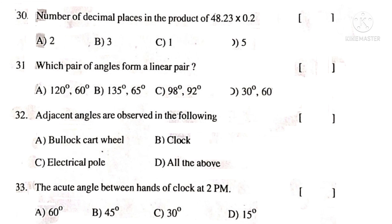Now, 30th. Number of decimal places in the product of 48.23 into 0.2. Observe that there are two decimal places in the first number. One decimal place in the second number. Total three decimal places. So, the correct choice is B.